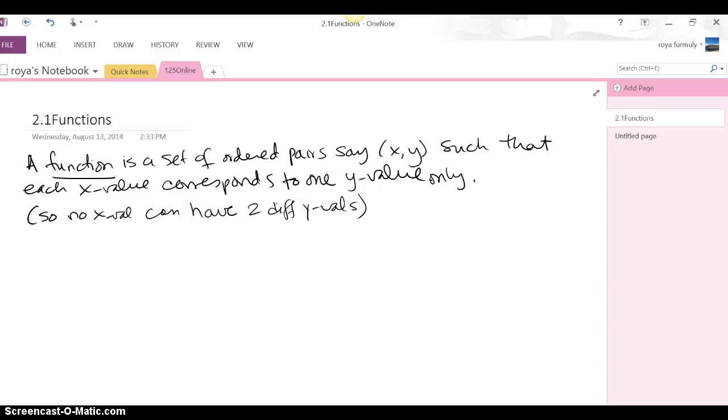A function is a set of ordered pairs, let's say (x, y). It doesn't have to be x and y, it can be p and q if it wants to, such that each x value corresponds to one y value only. In other words, no x value can have two different y values.